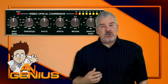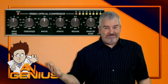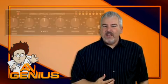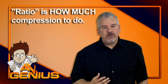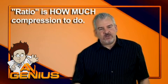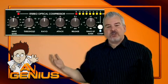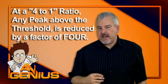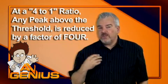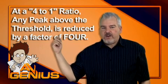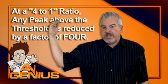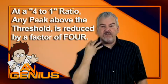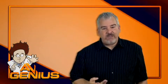The next control is ratio. It's how much compression you're going to do once the sound exceeds the threshold. Let's say you set the control to 4 to 1. Any peak in a sound that exceeds the threshold will have the parts of the sound that are above the threshold reduced in level by a factor of 4 or divided by 4.